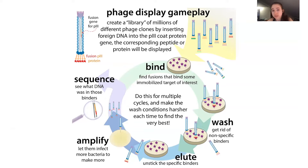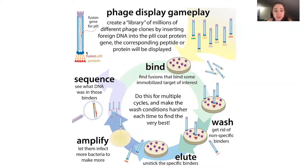If some of these terms don't sound familiar to you now, don't worry — we're going to dive into them and hopefully you'll be less confused by the end. So basically, a phage is a bacteriophage. It's a virus that infects bacteria, and what you do is you get this bacteriophage to display a fusion protein. It has its protein, but then you stick a bit of a protein you want it to show into the protein that sticks off the surface of this phage.